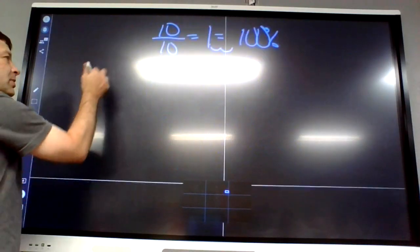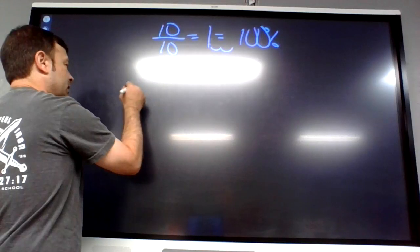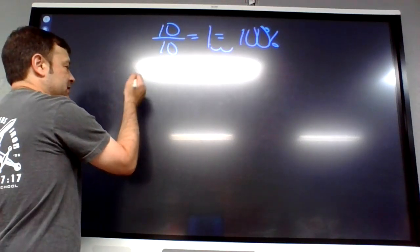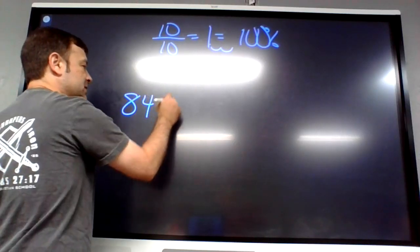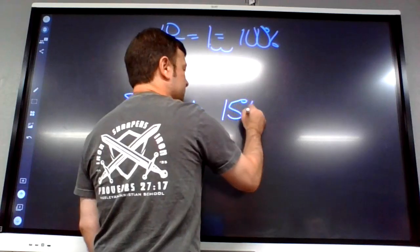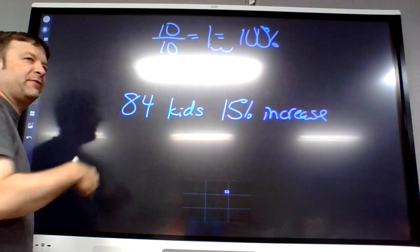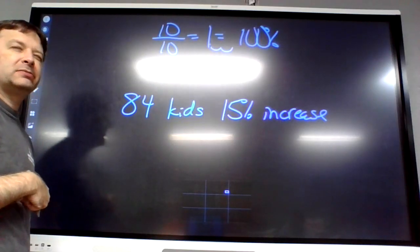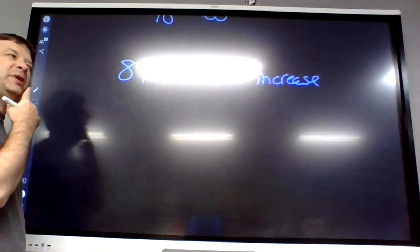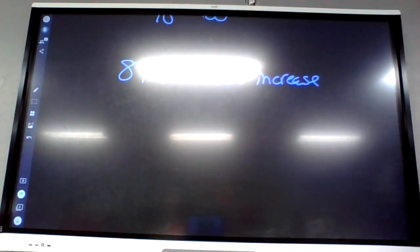Let's say our school last year had 84 kids, and this year it increased by 15 percent. How many kids are there now? So how do I increase a number by 15 percent? Any guesses?